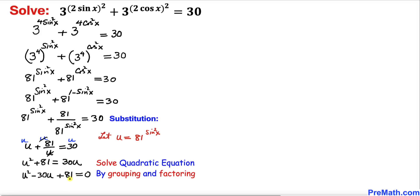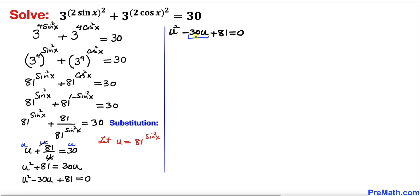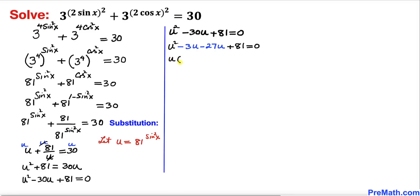Now we solve this quadratic equation by grouping and factoring. We can split −30u as −3u − 27u. Factoring, u is common in the first two terms and −27 is common in the last two terms, giving u(u − 3) − 27(u − 3) = 0. Factoring out (u − 3) gives (u − 3)(u − 27) = 0.